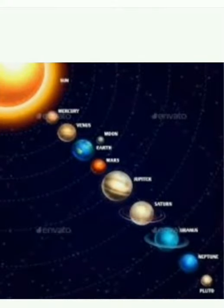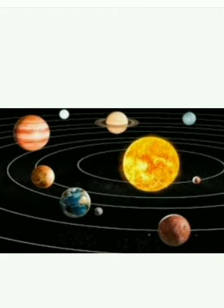Before 2005, we considered there are 9 planets in the solar system. After 2005, we considered there are 8 planets. All the planets are revolving around the sun.